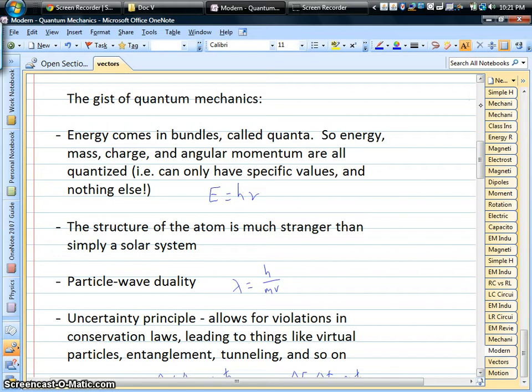You don't really have the time to get into where they come from in chemistry. Here we're going to have a very simple one-dimensional example to show where these integers, these quantum numbers, come from.